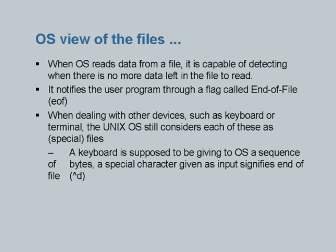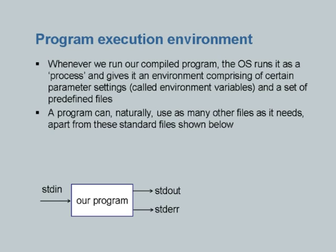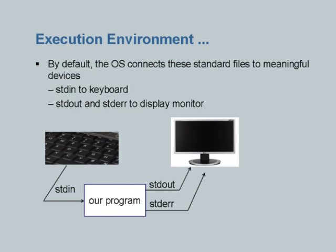Files coming from keyboard or going to terminal are treated as special files. If you want to indicate end of file from the keyboard — signaling you want to give no more input — you type Control-D. Whenever your program starts, three files are automatically created and opened: stdin, stdout, and stderr, connected by default to the keyboard and terminal.